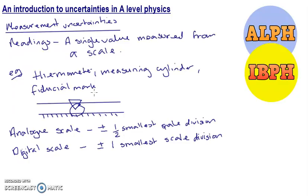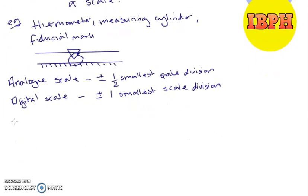What if we were measuring the length of something? If we're measuring the length of something, what we're doing is measuring the difference between two readings. These are called measurements. If we've got a difference between two readings, we're going to have plus or minus one smallest scale division for an analog scale.